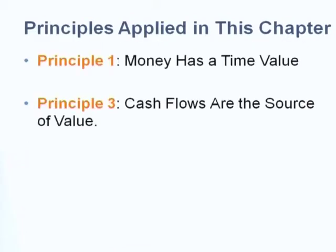This chapter concerns two principles. Principle one: money has a time value — one dollar today is worth more than one dollar tomorrow. Principle three: cash flows are the source of value; only cash that can earn interest matters, not accounting profit.